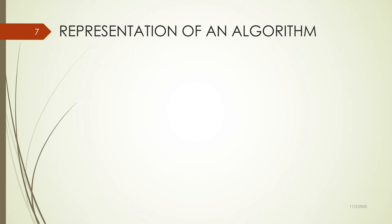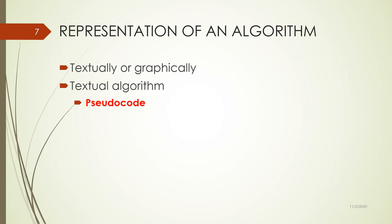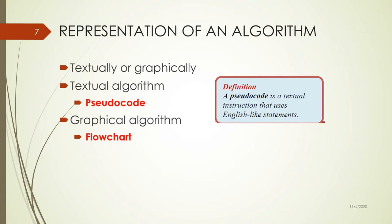There are two types of algorithm representation. You can have the algorithm either textually or graphically. You can write it using what we call pseudocode, or you can draw it using what we call a flowchart.